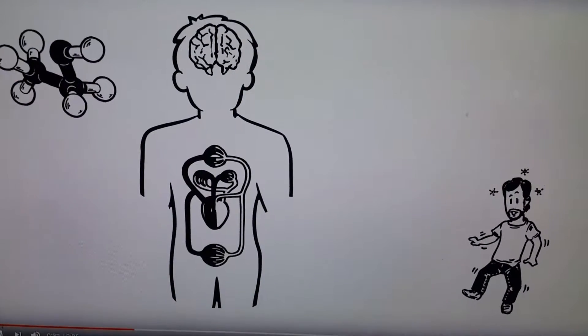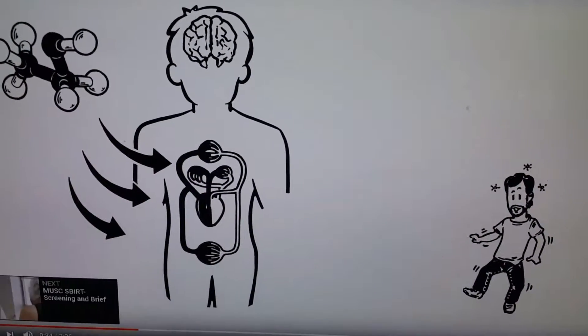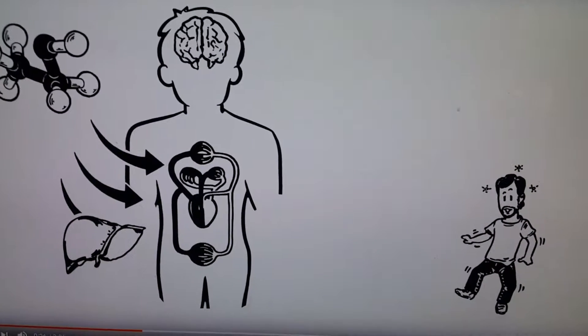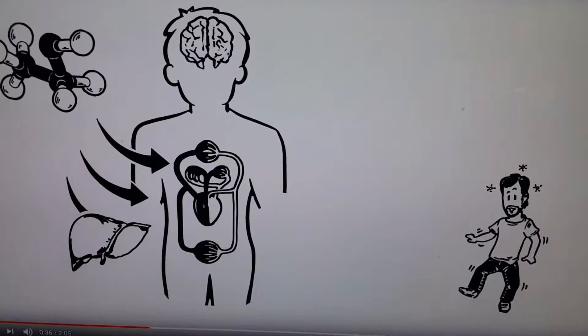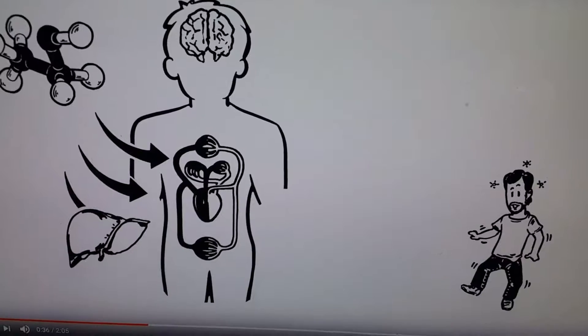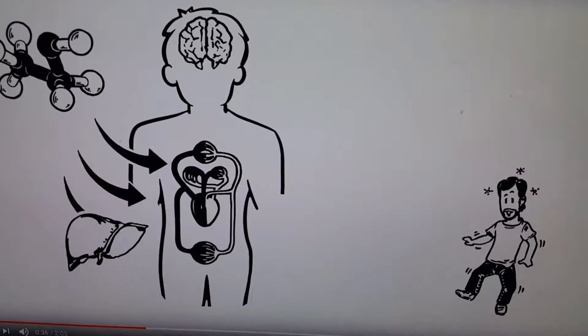The intoxicating effects of alcohol are caused by ethanol entering the bloodstream faster than the liver can break it down.